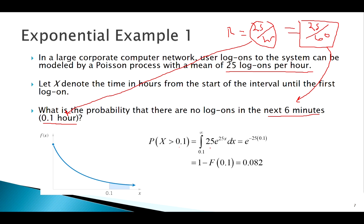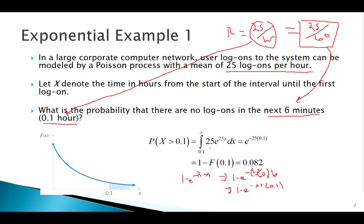Or we can plug into the CDF. Remember the CDF is 1 − e^(−λx). So we could use lambda = 25/60 and x = 6, or lambda = 25 and x = 0.1 — both give the same result. With any continuous random variable you can integrate the PDF or use the CDF, but the exponential has a simple CDF so that's preferred.